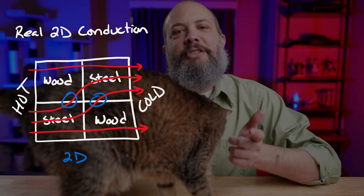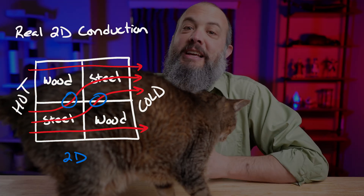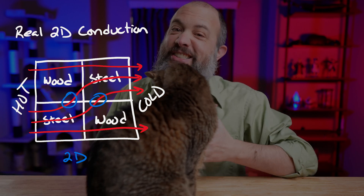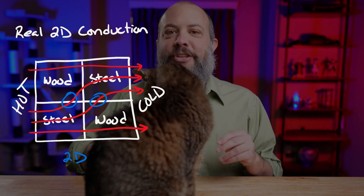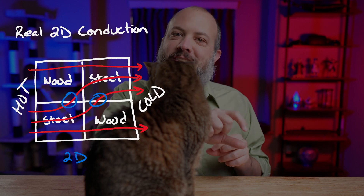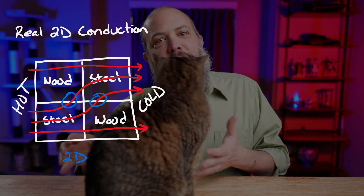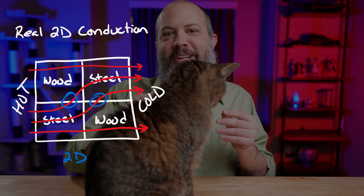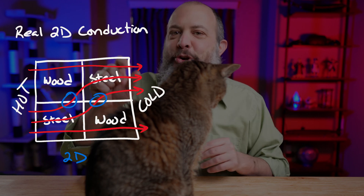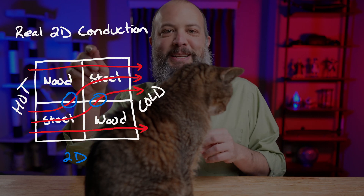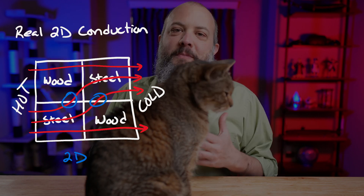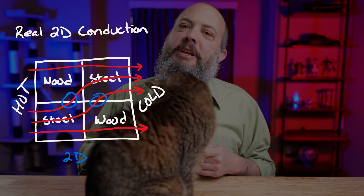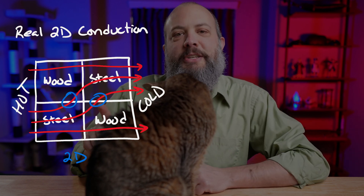The main conclusion is that two-dimensional real-world conduction is a little bit messy. The heat doesn't only flow through just the steel and then just the wood. The real energy starts through the steel and then kind of cuts across the corner of the wood to get to the other part of steel. Fortunately, there are two pretty good ways to approximate this as one-dimensional flow.